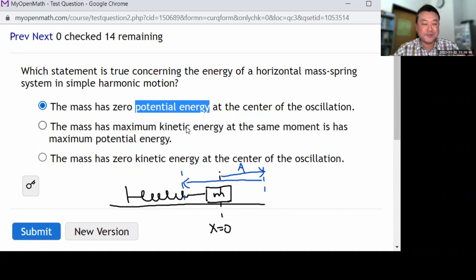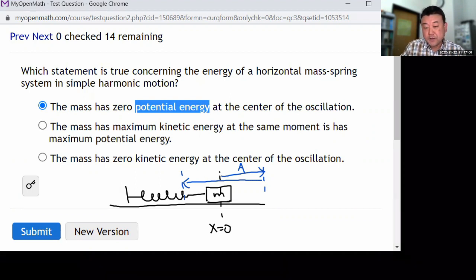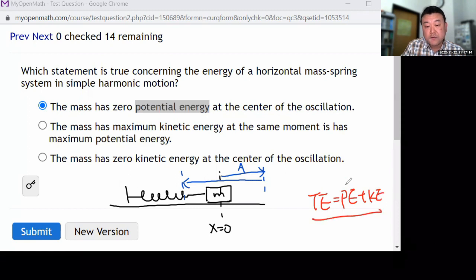But the thing about potential energy is it's only meaningful in terms of the difference in potential energy. So zero potential energy can be a meaningless statement. The mass has maximum kinetic energy at the same moment as maximum potential energy - that is incorrect. Because if total energy is conserved and you have total energy equals potential energy plus kinetic energy, then whenever one of them is maximum, the other should be at minimum. The mass has zero kinetic energy at the center of the oscillation - that's definitely wrong. Because at the center of the oscillation, the potential energy is at a minimum, so kinetic energy should be at maximum.